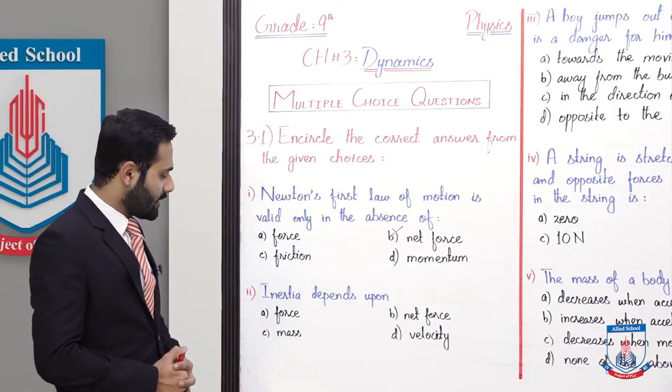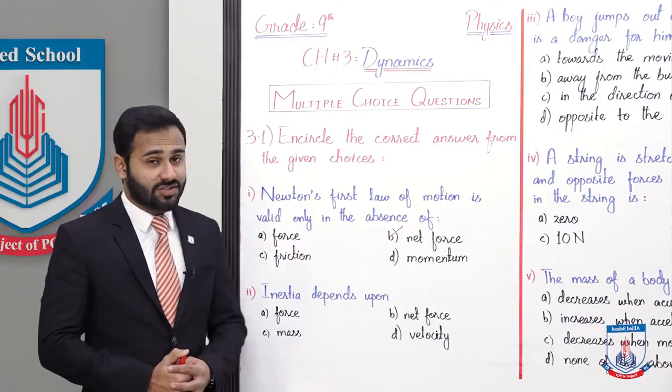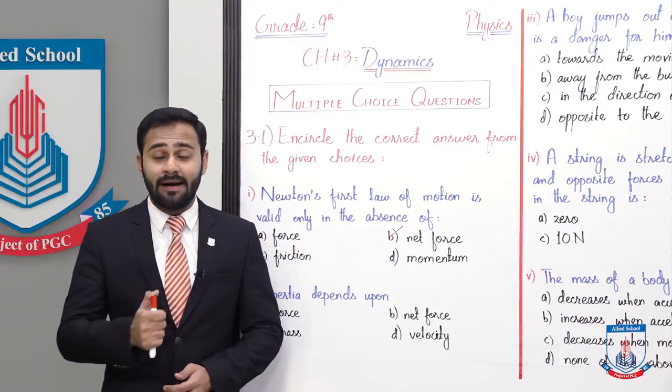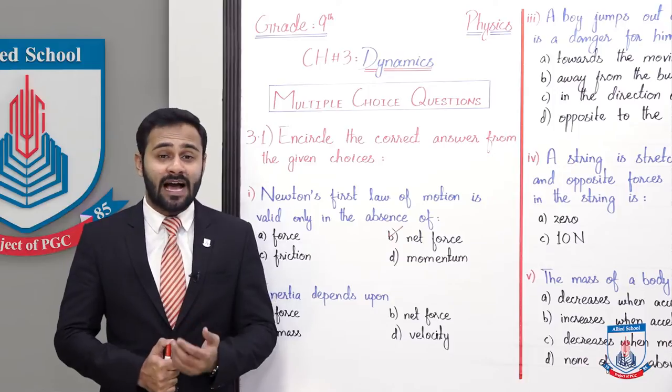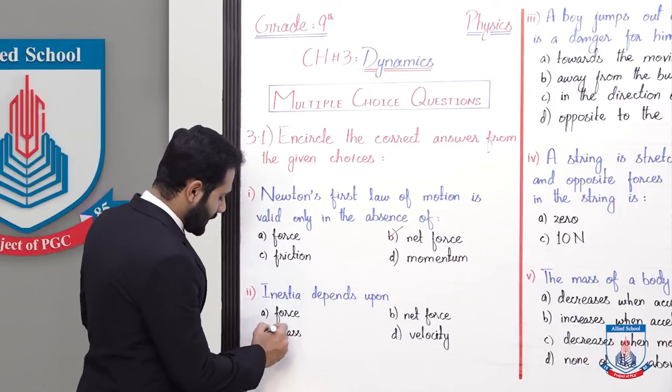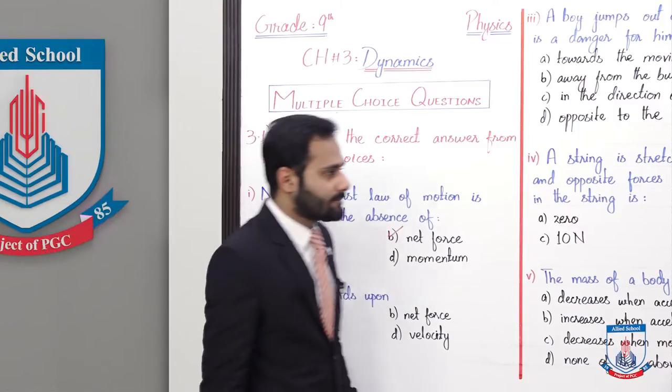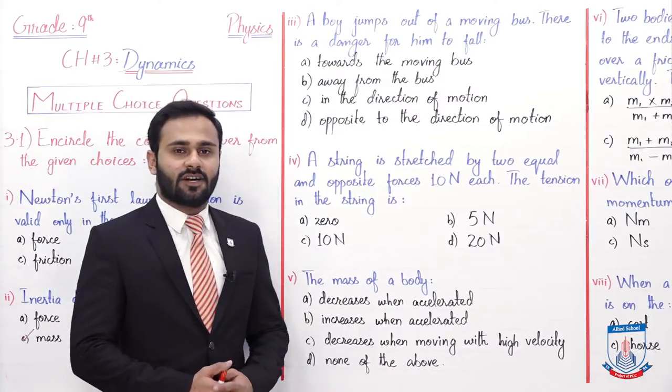Now the second MCQ. Inertia depends upon A force, B net force, C mass and D velocity. So inertia depends on the mass of any body. So the correct option is C. So now move to the next MCQ.